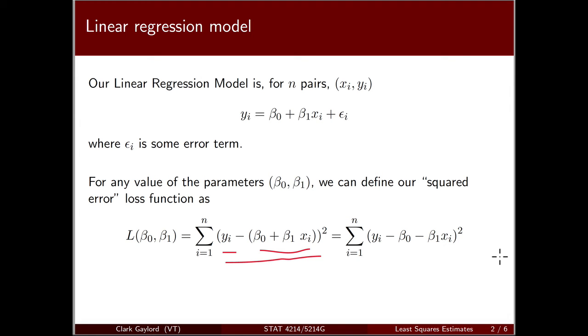To minimize this squared error loss, we differentiate with respect to beta0 and beta1. We can find the best beta0 and beta1 values that minimize this. These are the estimators that minimize the squared error loss function, hence least squares.